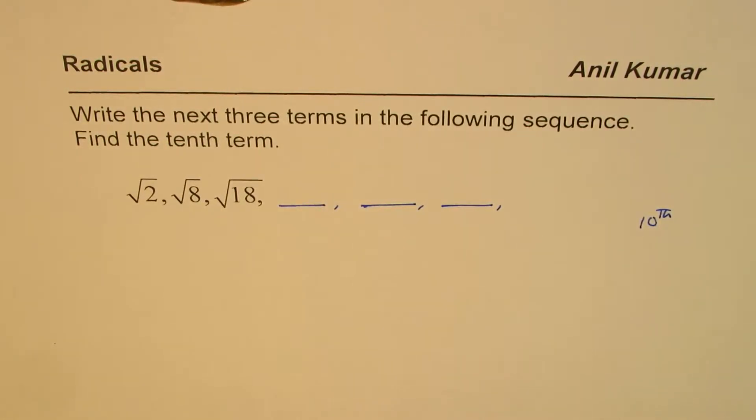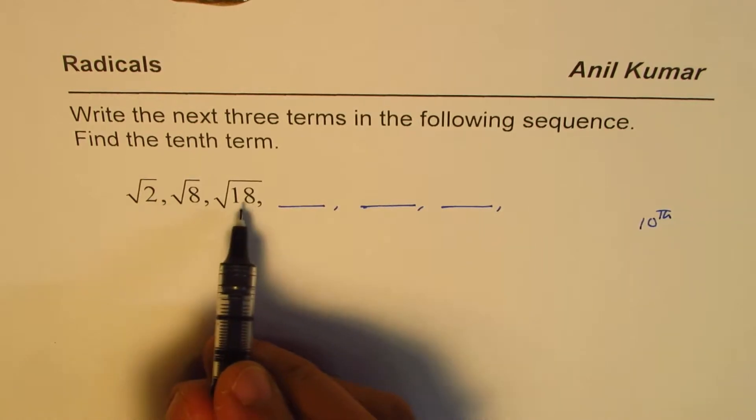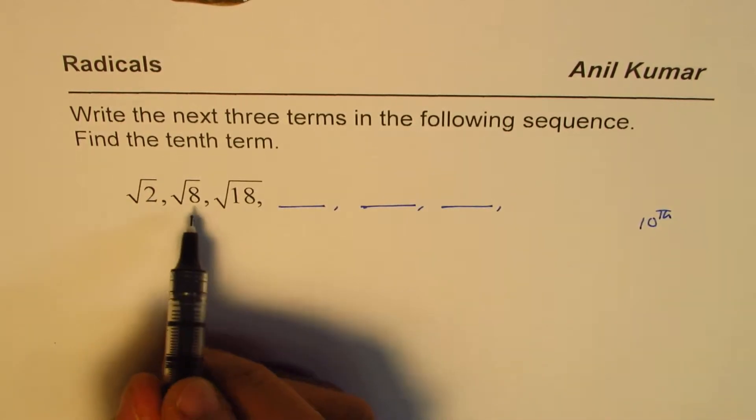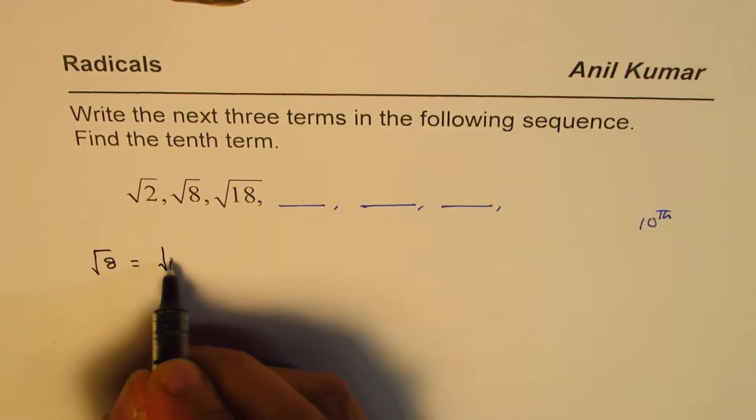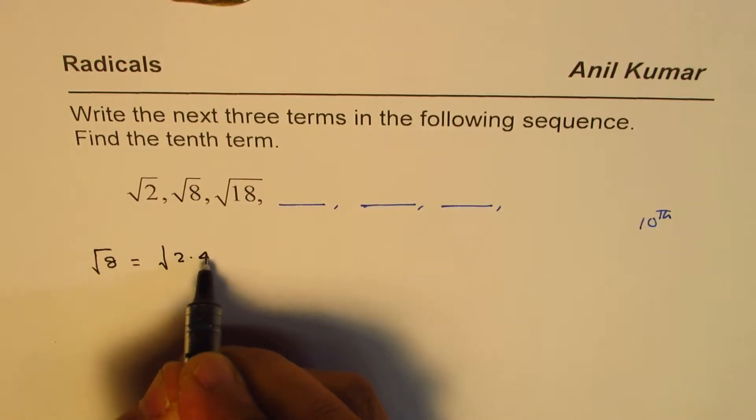Now here we are given square root of 2, square root of 8, and square root of 18. So let us see how to write square root of 8. Well, square root of 8 is equals to square root of 2 times 4, which could be written as 2 square root of 2.